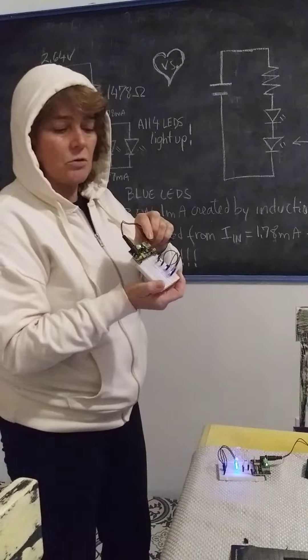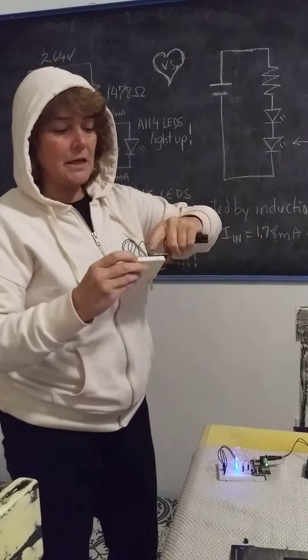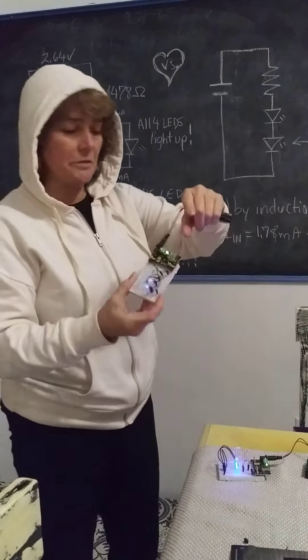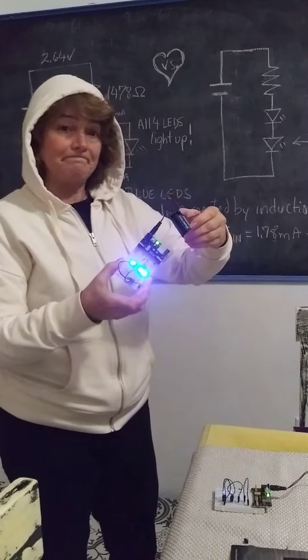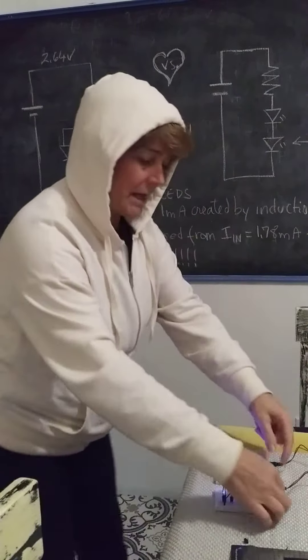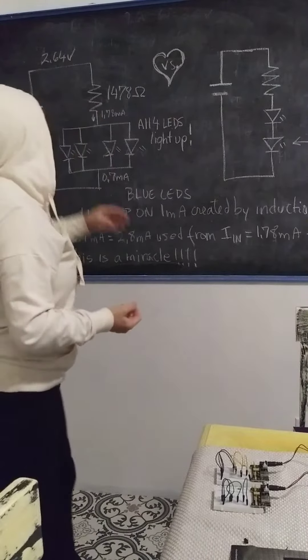But they have the same power source: a 9 volt battery and a regulator set at 3.3 volts on both of them. So what's going on? I have the same power source but I get a lot of brightness on four LEDs.